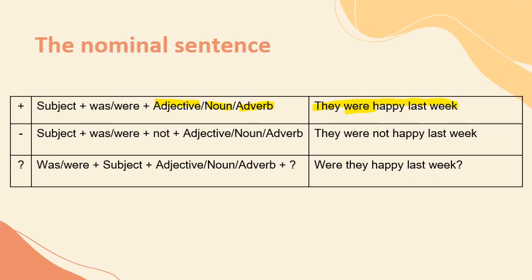Kalau negatif, kita tinggal tambahkan 'not' setelah 'was' atau 'were'. Contoh: 'They were not happy last week' — mereka tidak senang minggu lalu. Dan kalau pertanyaan, kita tinggal pindahkan 'was' atau 'were'-nya di depan. Contoh: 'Were they happy last week?' Jadi, apa perbedaan 'was' sama 'were'? 'Was' itu untuk subject I, he, she, it. Kalau 'were', untuk they dan we.